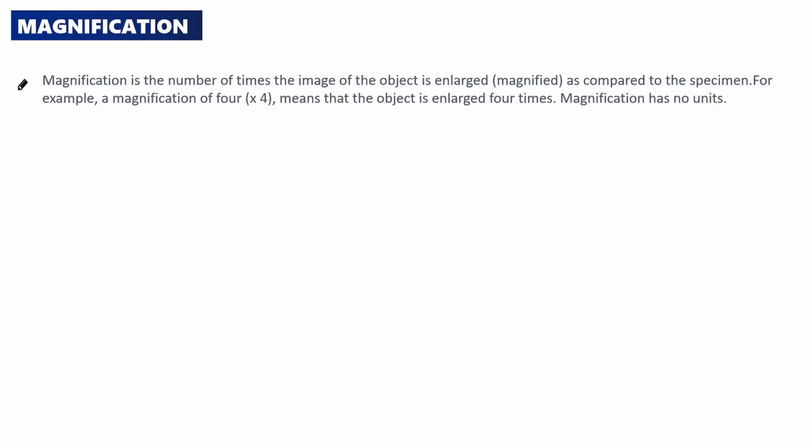Let's look at magnification. Magnification is simply the number of times the image of the object is enlarged as compared to the specimen. For example, a magnification of four times means the object is enlarged four times. Magnification has no units.